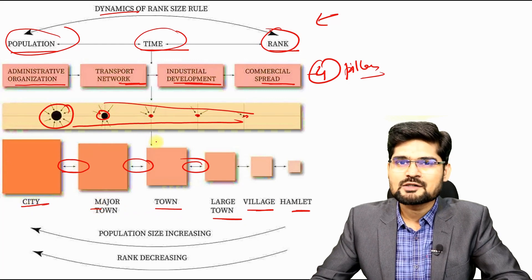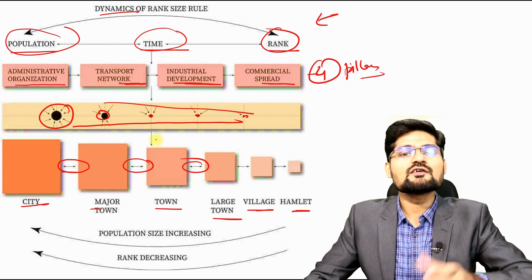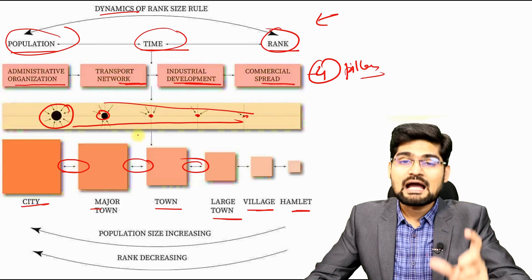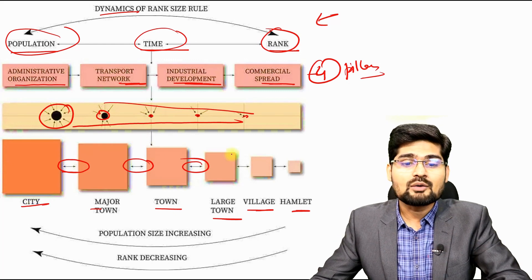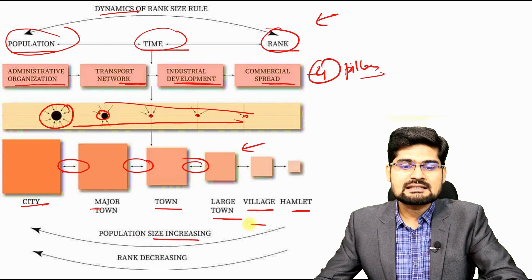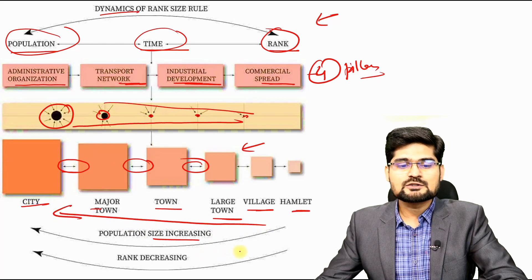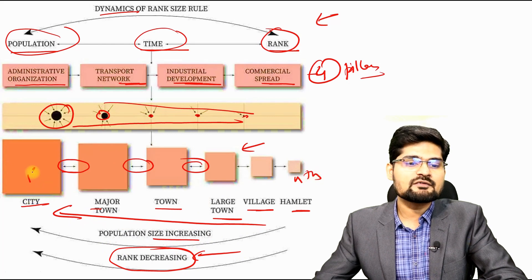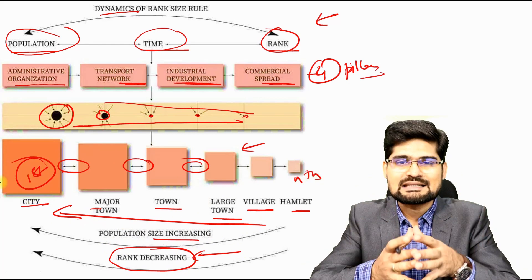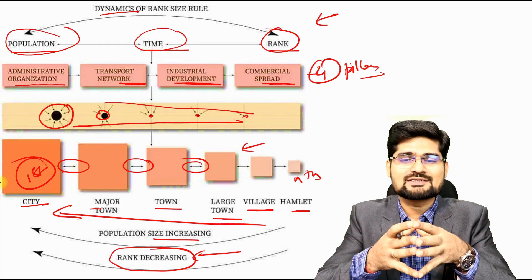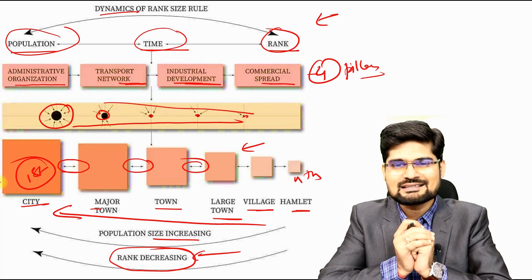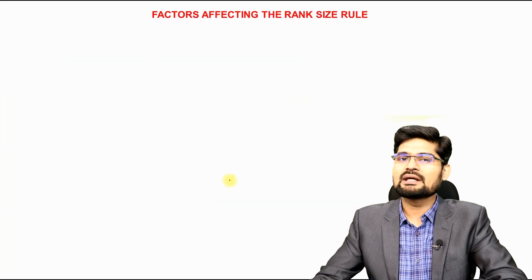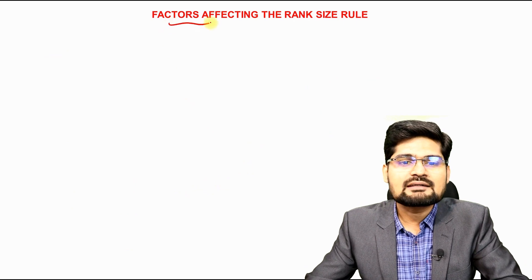The hierarchy from hamlet to village to large town to major town to city can be well understood through the concepts of primate city and rank size rule. Population size increases as you move up, while rank number decreases — first-rank cities are the biggest, and there is only one of them. This is the relationship captured in the flow diagram.